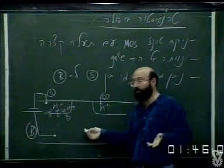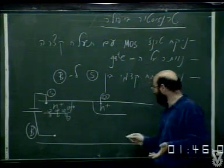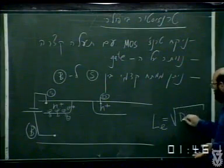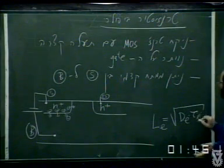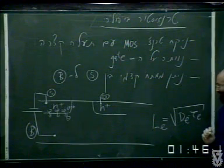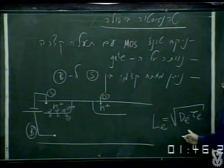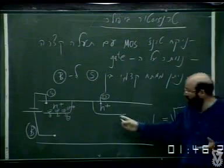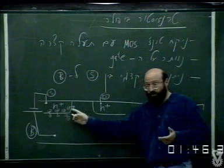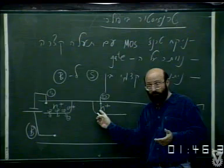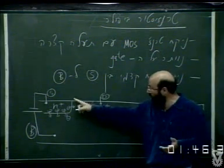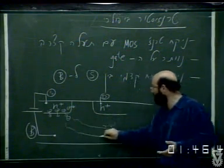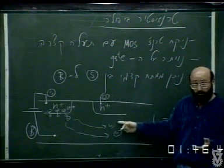לאיזה מרחק יכול נושא מיעוט לעשות מרחק דיפוזיה? L_E שווה ל-√(D·τ). המרחק הזה הוא מסדר גודל של מיקרונים, יכול להיות עשרות מיקרונים. אנחנו נמצאים במצב שחלקי מיקרון בין הסורס לדריין. זאת אומרת, אם מרחק הדיפוזיה הוא עשרה מיקרון והמרחק פה הוא חצי מיקרון, אז אלקטרונים יכולים לעשות פה דיפוזיה עד לכל מקום - בטווח של הדריין.